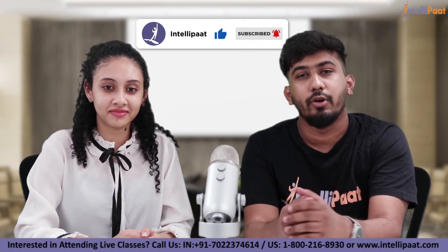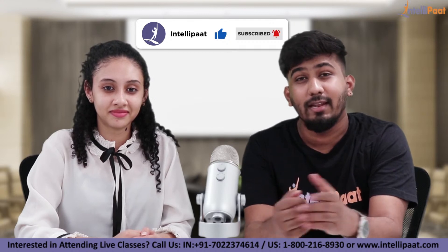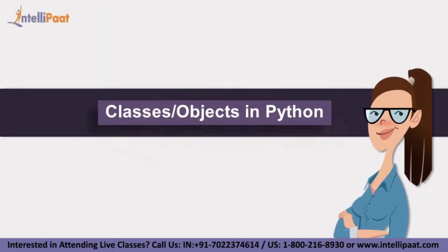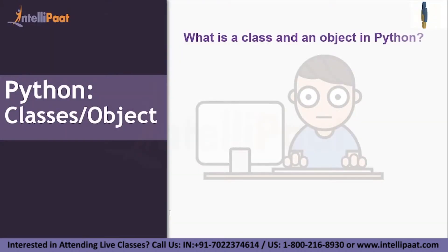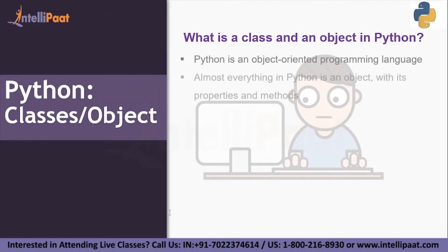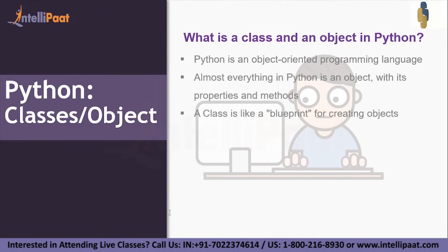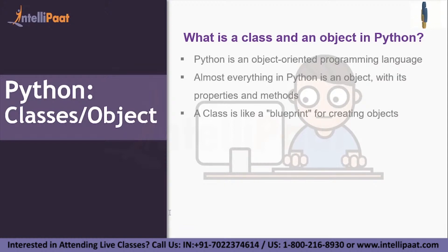Python class is an object. What is a class and object in Python? Python is an object-oriented programming language and almost everything in Python is an object with its properties and methods. A class is like a blueprint for creating objects.